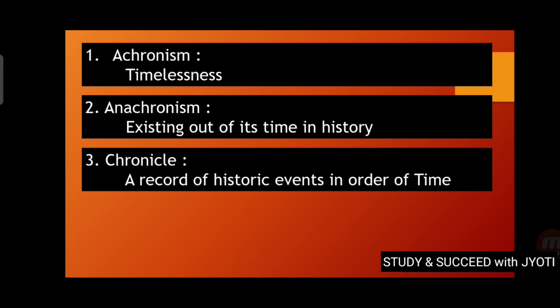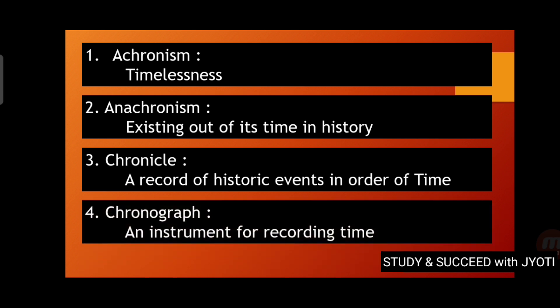Chronicle. Chronicle means a record of historic events in order of time — a history or time-related record. Chronograph is an instrument which is used for recording time.